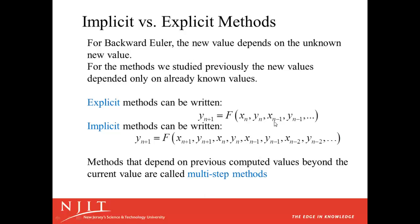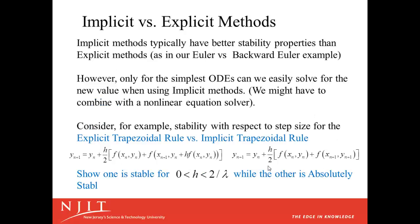As we noticed in our stability analysis, implicit methods are often more stable than the explicit methods. Methods that depend on previous computed values, not just on the x and y ends, but if you go back further, x_n-1, y_n-1, and so forth, those are called multi-step methods. Implicit methods typically have better stability properties than explicit methods, as in our Euler versus backward Euler examples. However, only for the simplest differential equations can we easily solve for the new value when using implicit methods. We might have to combine using the implicit method with a nonlinear equation solver, such as Newton's method, if we use implicit methods on more difficult differential equations.